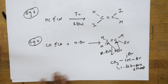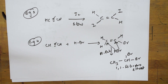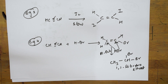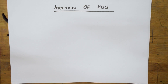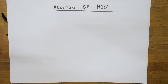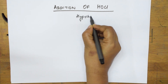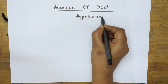So the concept is clear — this is how you add HCl, HBr, iodine around the triple bond in electrophilic addition reactions. Now let us look at the next type: addition of HOCl — hypochlorous acid.